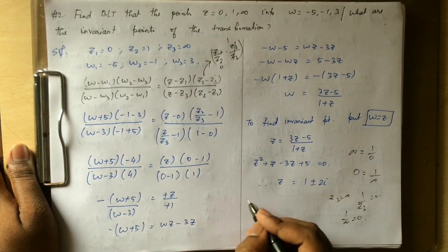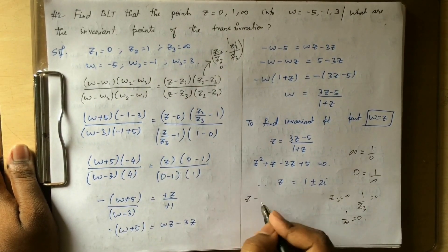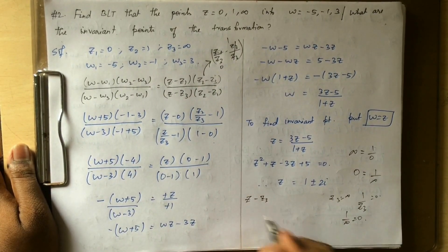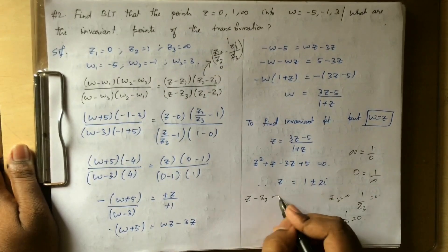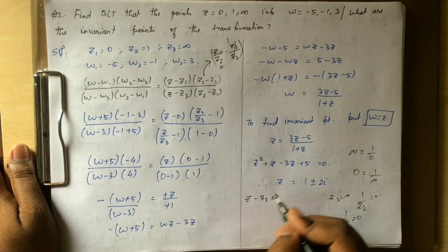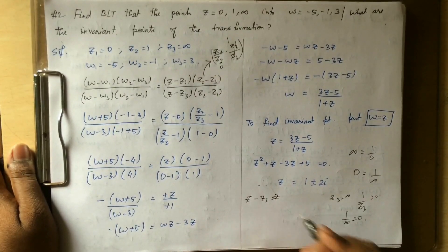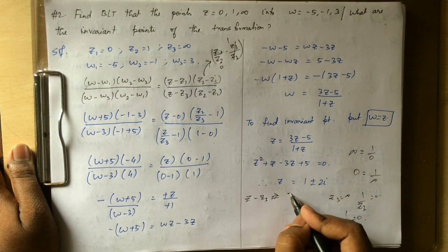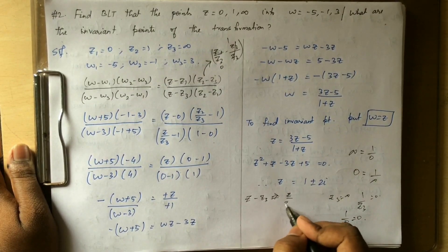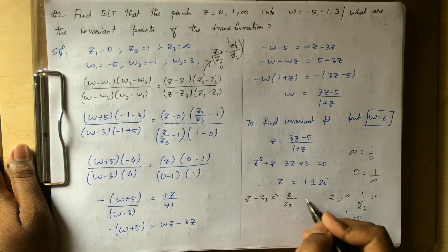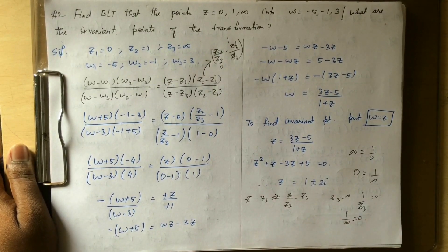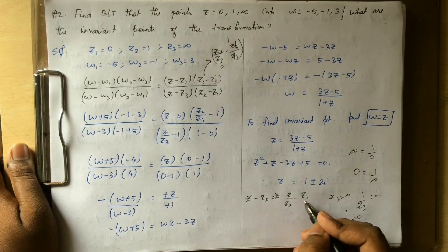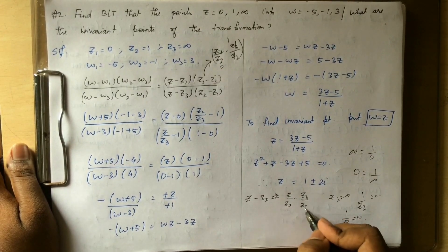We take the term z minus z3 and divide by z3, giving us z by z3 minus z3 by z3. This simplification is the key step in handling the infinity substitution in the cross-ratio formula.